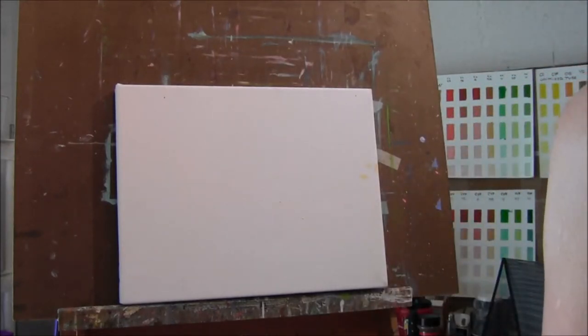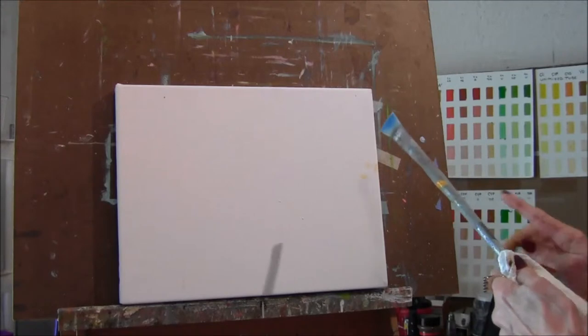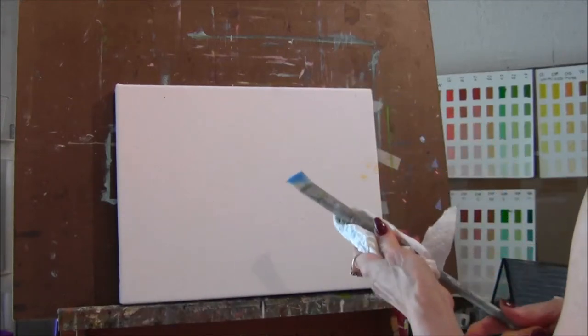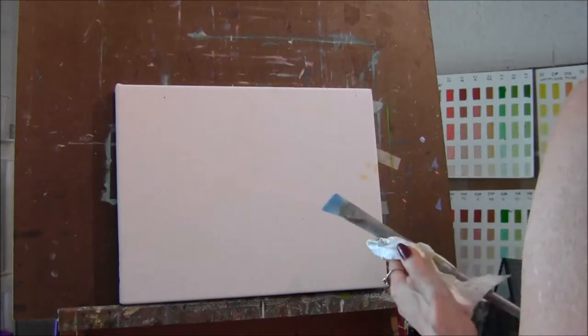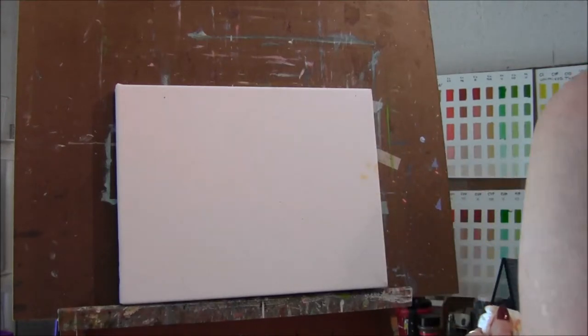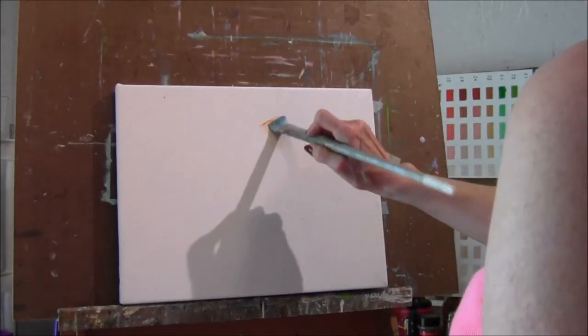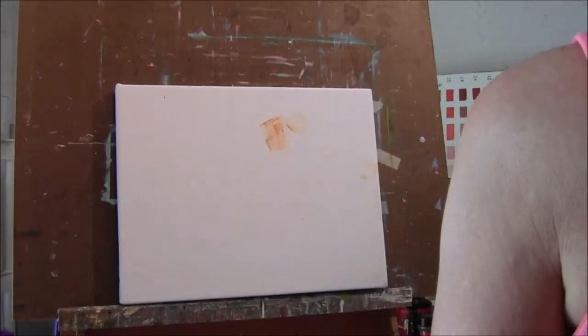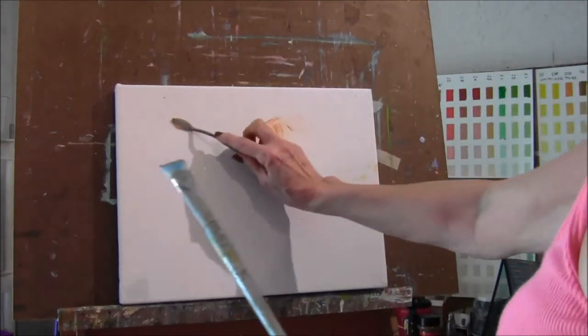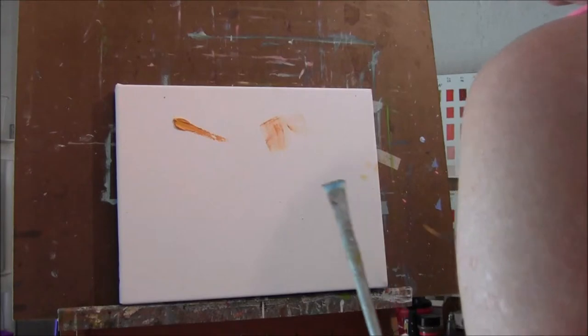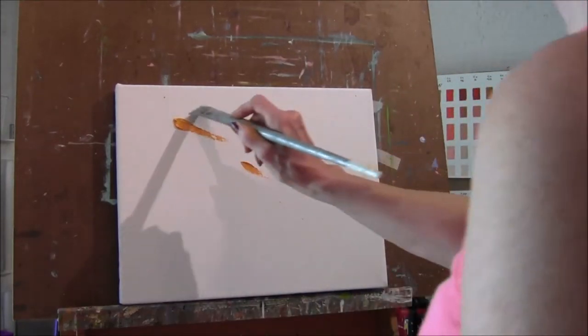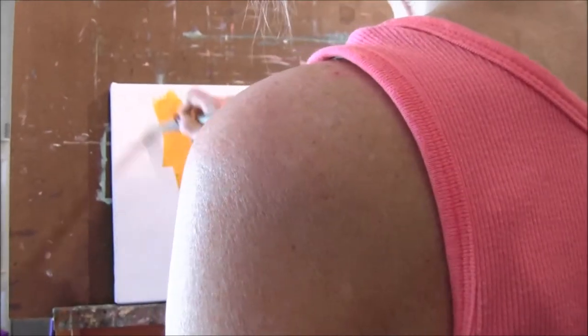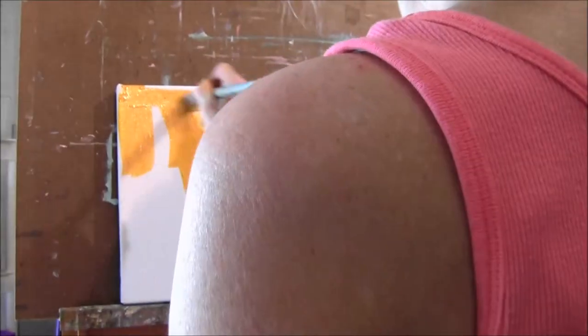Now when you tone a canvas, you should probably use a big brush. When you're toning it, you want to put on a lot of paint and then use turpentine to dilute it down and get it all covered.